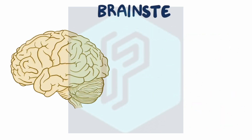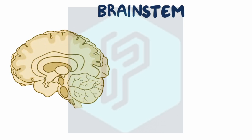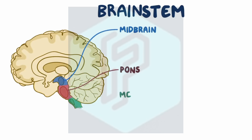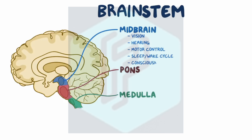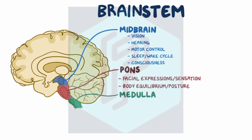Finally, there's the brainstem, located right in front of the cerebellum. The brainstem is made up of three parts — the midbrain, pons, and medulla — and connects to the spinal cord. The midbrain is the uppermost part and participates in vision, hearing, motor control, the sleep-wake cycle, and consciousness. The pons is the middle part and contains nuclei that control facial expression, sensation, body equilibrium, and posture. The medulla is the lower part and contains nuclei that help regulate blood pressure, breathing, swallowing, coughing, vomiting, and digestion.